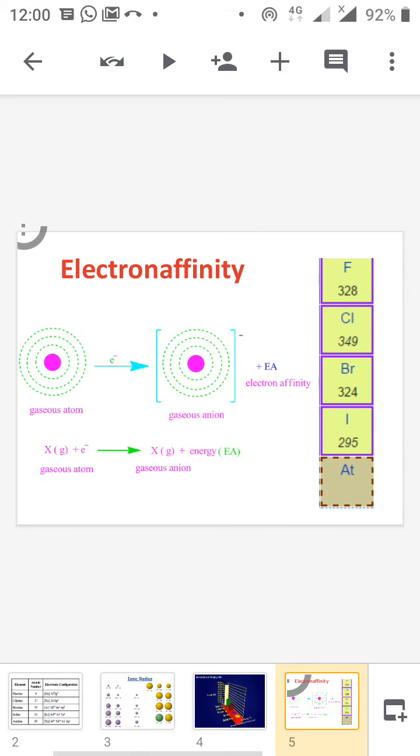Next is the electron affinity. Electron affinity is very high for chlorine, then fluorine, bromine, and iodine.